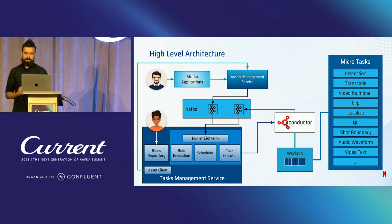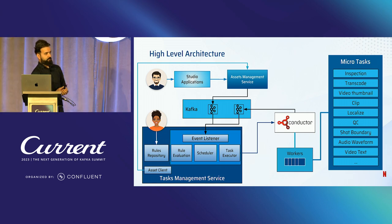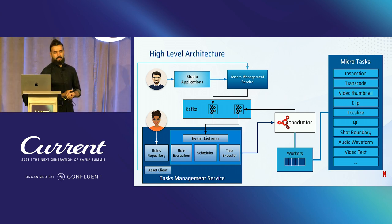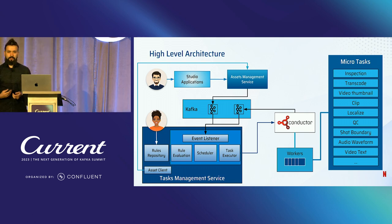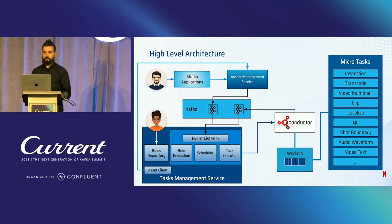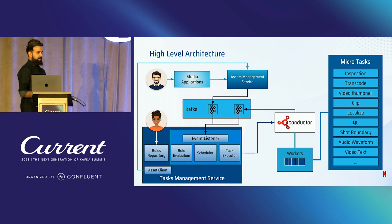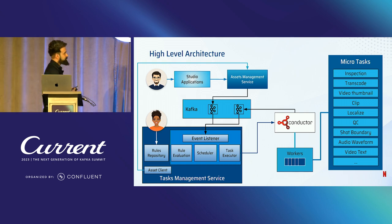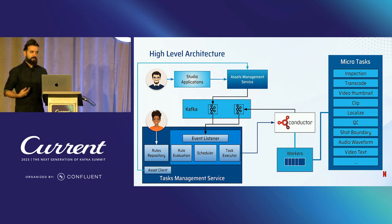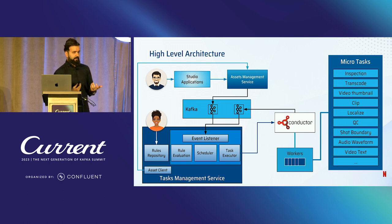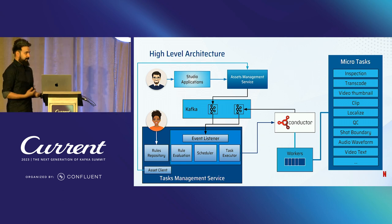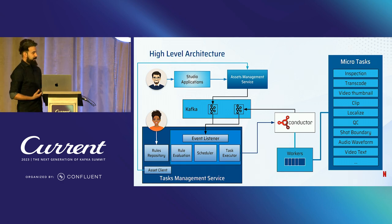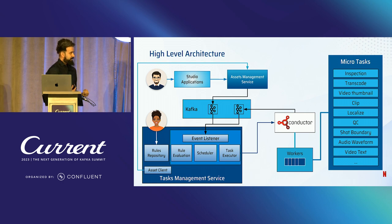At a high level, studio applications persist their assets in the asset management platform — a microservice we own that stores assets in Cassandra and indexes them in Elasticsearch due to high RPS and search requirements. We added Kafka in between so that any time an asset is created or updated, we send an event. We introduced a rule engine that listens to these events, evaluates the rules defined by task authors, starts eligible tasks, and monitors them. Once they succeed or fail, they send events back to Kafka, and we update the assets accordingly.